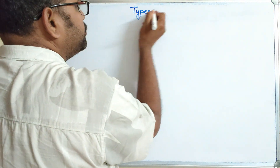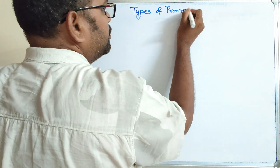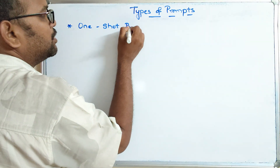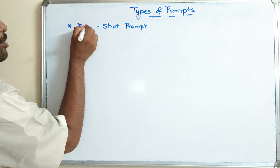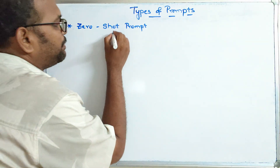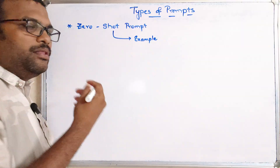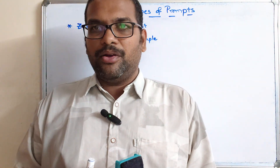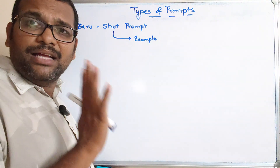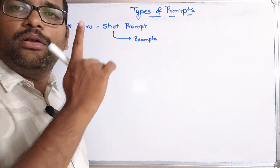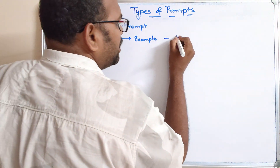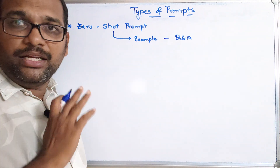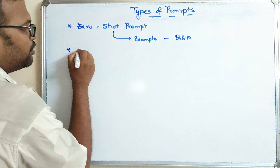The first type is the zero shot prompt. Here, 'shot' represents an example. We give examples to the AI model and based on those examples it analyzes how we require the output. If you are not giving any kind of example, that is called a zero shot prompt — it's just like Q&A. You ask a question and it gives an answer from the pre-trained data. No examples are given.